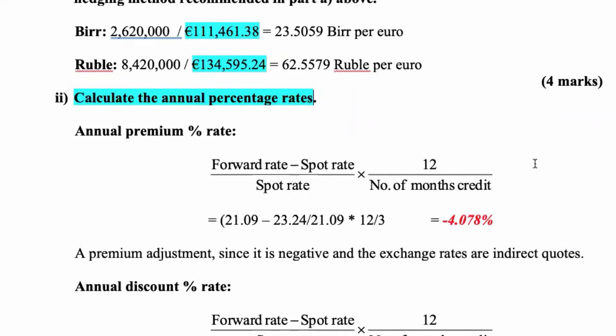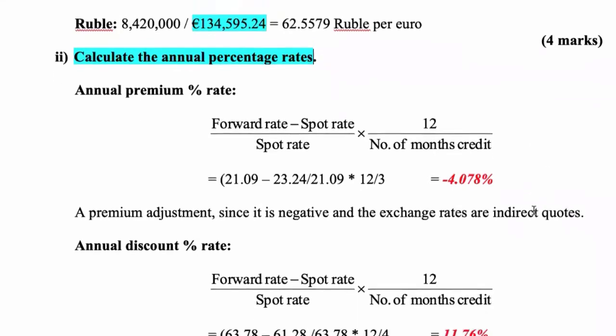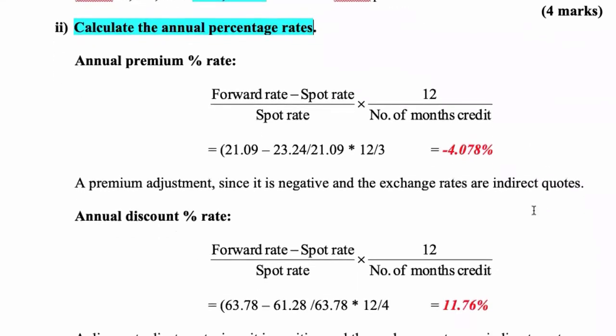So calculate the annual percentage rate — it's the same formula whether it's a premium or a discount, so you see it twice here. Please write down: forward rate minus spot rate, divided by the spot rate. I'm going to have to check these to see if the solutions are correct.